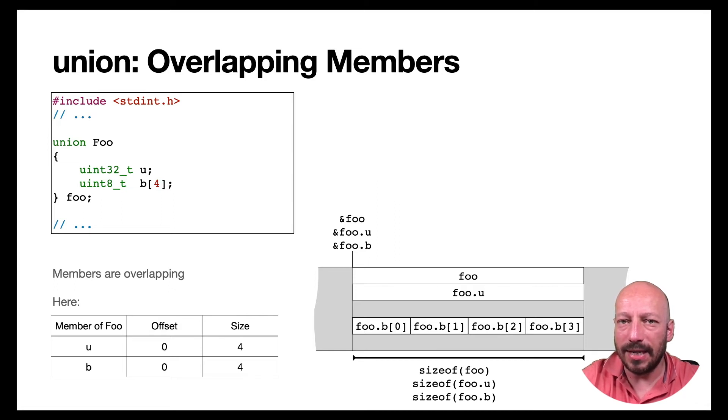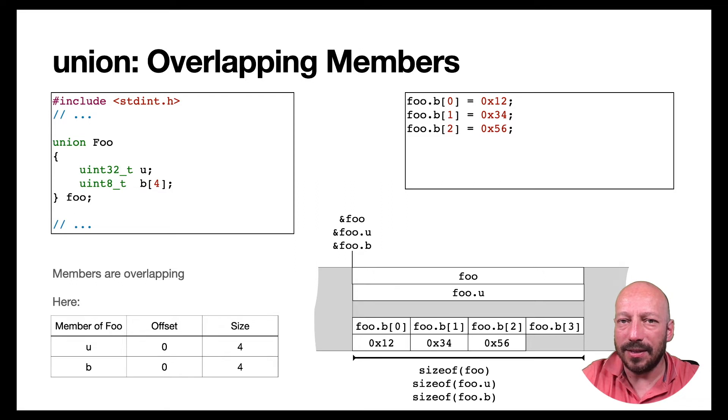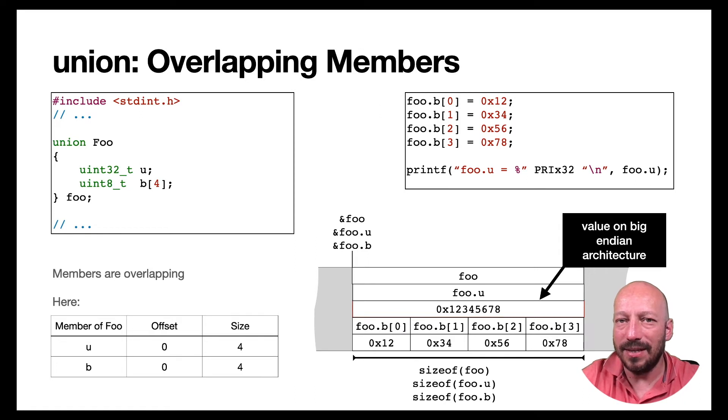And also both members in this case occupy exactly the same memory location. So that means if you now write to this array elements of this second member like that, you also override this first member of this union. And if you afterwards print out the value of this first member like that, you will see whether you do this on a big endian machine or a little endian machine. If you do this on a big endian machine, then you of course will see this value being printed out and on a little endian machine this value. And this is exactly what I will now show you in the demo on two machines to which you also have access to. So let's do this together.